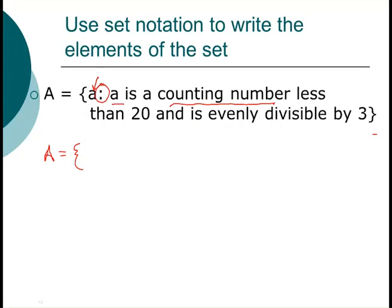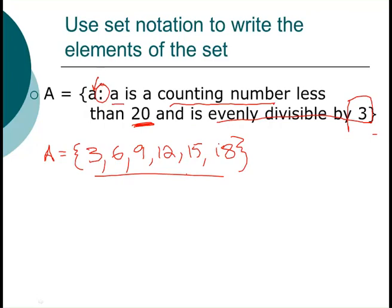Well, one doesn't work, two doesn't work, three's our first one that works, five doesn't work, six does work. Four doesn't work, five doesn't work, six works, and then we just keep on rolling through. So we got six, nine, twelve, fifteen, eighteen, and then that's it because the next one's twenty-one and it says less than twenty and evenly divisible by three. So this is the list and then this is how it would be in set builder notation. This is our listing.